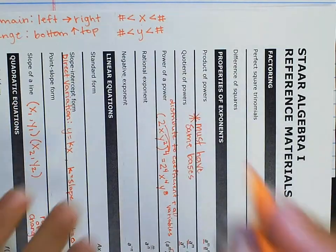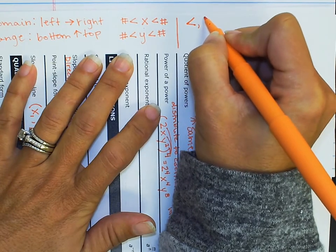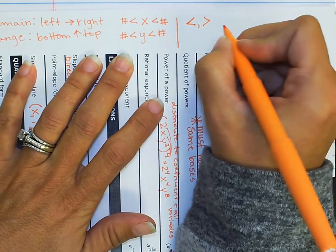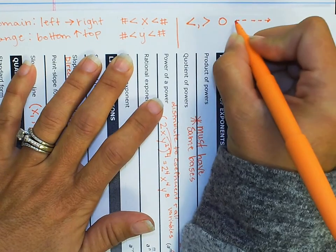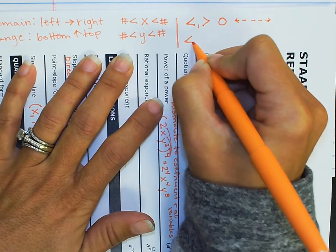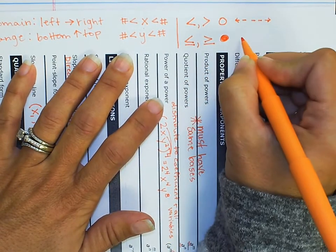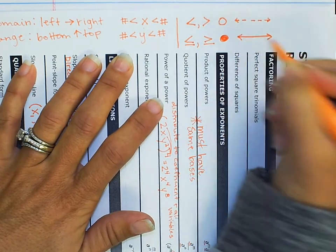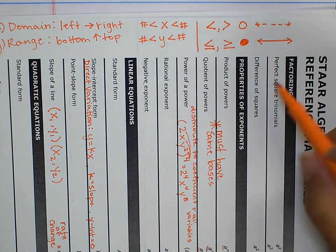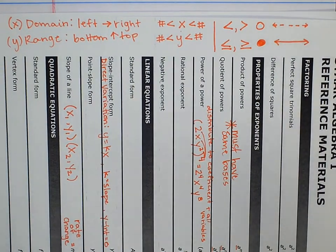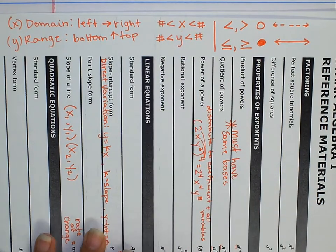One other important piece of domain and range: if we just have greater than or less than — without the equal — that's going to be an open dot, represented with an open dot or a dashed line. If we have less than or equal to or greater than or equal to, that's going to be represented with a closed dot or a solid line. So these are our reminders for domain and range and inequalities — how we represent those on a graph. If you have a solid line or a colored endpoint, those may be equal to.